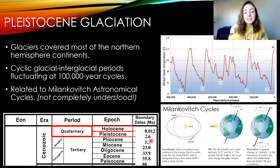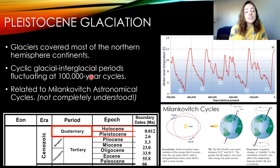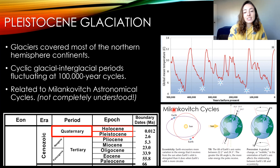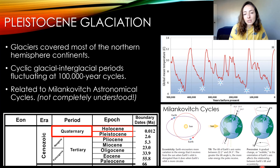Starting in the Pleistocene, which went from 2.6 million years ago to around 12,000 years ago, during this time Earth was going through cyclic periods of glacial and interglacial cycles. For the most part throughout the entire Pleistocene, glaciers covered most of the northern hemisphere continents, so it was still a very cold time even in the interglacial periods. We can see on this graph that these cycles were pretty consistent.